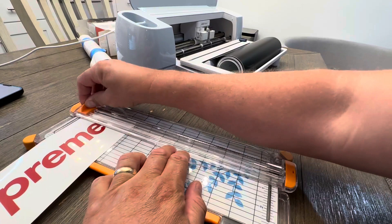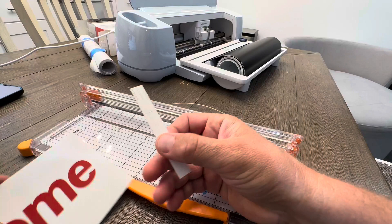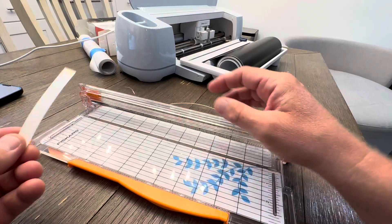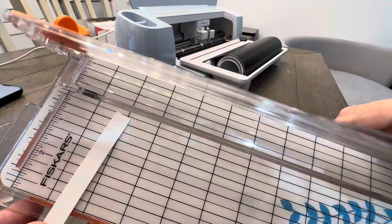That's how simple it is. As you can see, it's now cut and it cut through that thick vinyl sticker. It will do paper as well. It has some nice measurements here so you can know how far in you're going. That's zero, so that would be one inch right there.